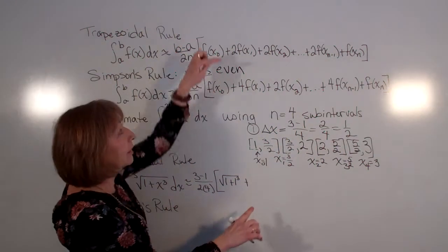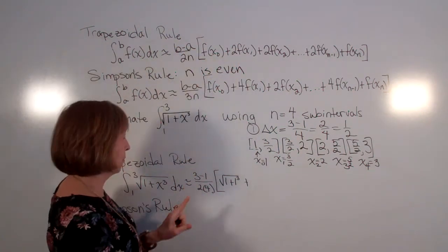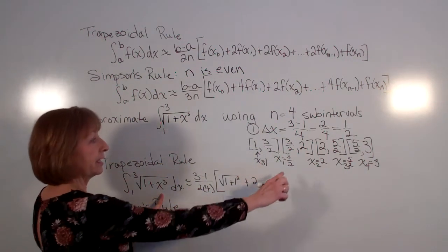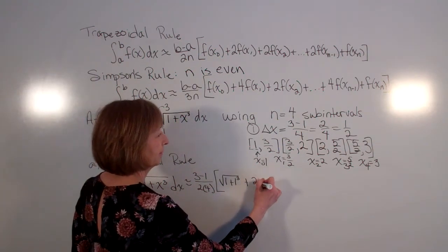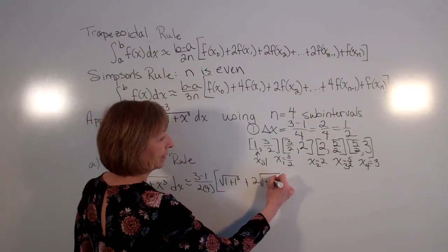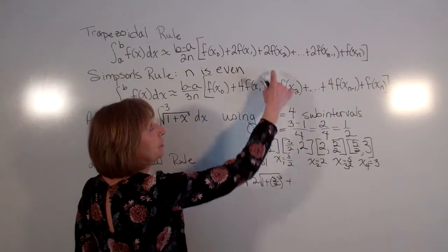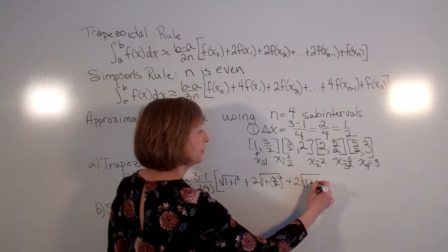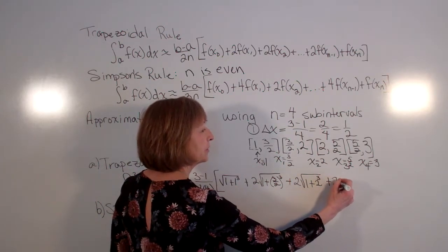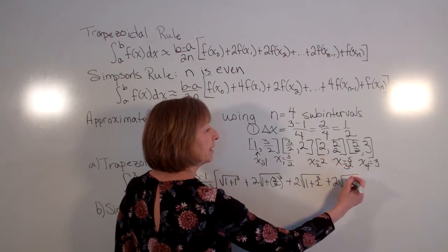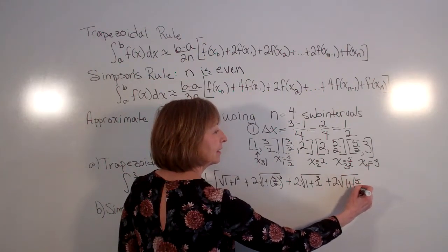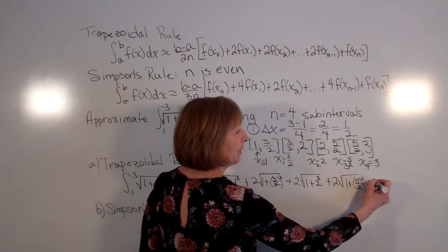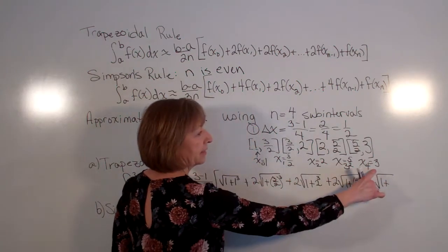And then plus 2 times f of x sub 1. So that's 2 times the square root of 1 plus 3 halves cubed plus 2 times f of x sub 2. So 2 times the square root of 1 plus 2 cubed. And then plus 2 times the square root of 1 plus 5 halves cubed. And then finally it's just f of x sub n. So the square root of 1 plus 3 cubed.